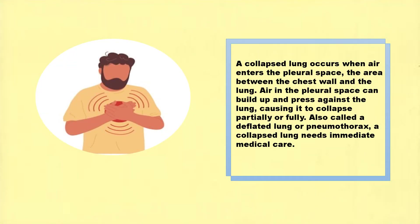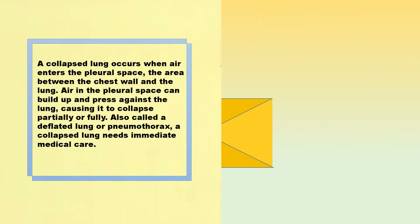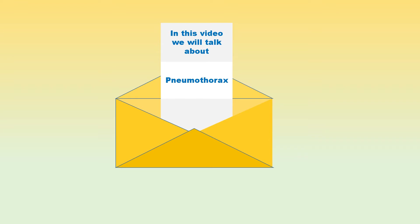A collapsed lung occurs when air enters the pleural space, the area between the chest wall and the lung. Air in the pleural space can build up and press against the lung, causing it to collapse partially or fully. Also called a deflated lung or pneumothorax, a collapsed lung needs immediate medical care. In this video we will talk about pneumothorax.